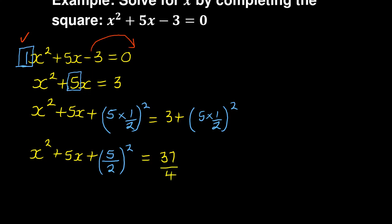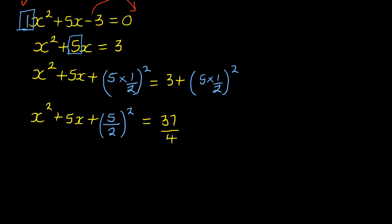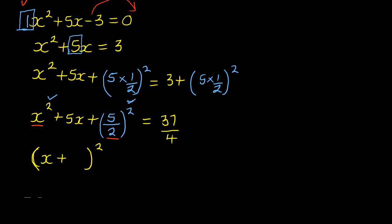Now we have a perfect square on the left. This is what it means to complete the square — the left side can be written as a bracket squared. Focus on the terms involving x and 5/2: we write it as (x + 5/2)² = 37/4. The 5x is already included in that squared bracket.